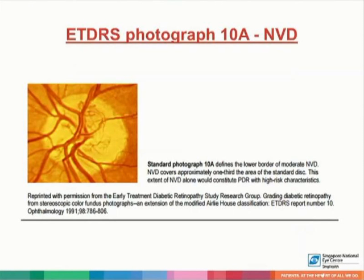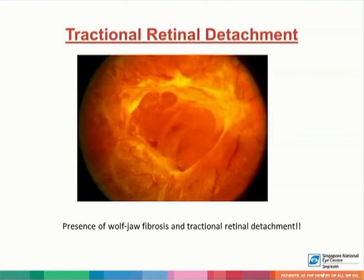This is photograph 10A, which defines neovascularization at the disc with at least one-third disc area. This picture shows the presence of tractional retinal detachment and presence of fibrovascular fibrosis.